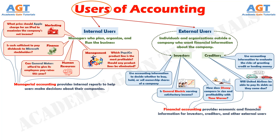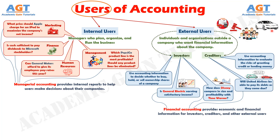The information needs of external users vary considerably. Taxing authorities, such as the Internal Revenue Service, want to know whether the company complies with tax laws. Regulatory agencies, such as the Securities and Exchange Commission or the Federal Trade Commission, want to know whether the company is operating within prescribed rules. Customers are interested in whether a company like Tesla will continue to honor product warranties and support its product lines. Labor unions such as the Major League Baseball Players Association want to know whether the owners have the ability to pay increased wages and benefits.